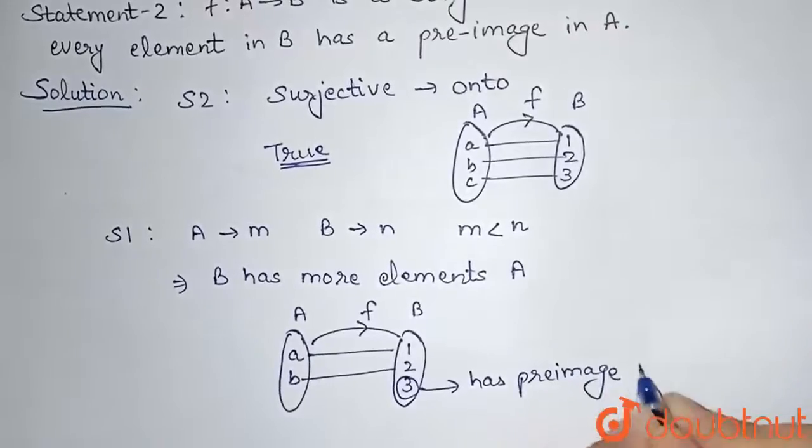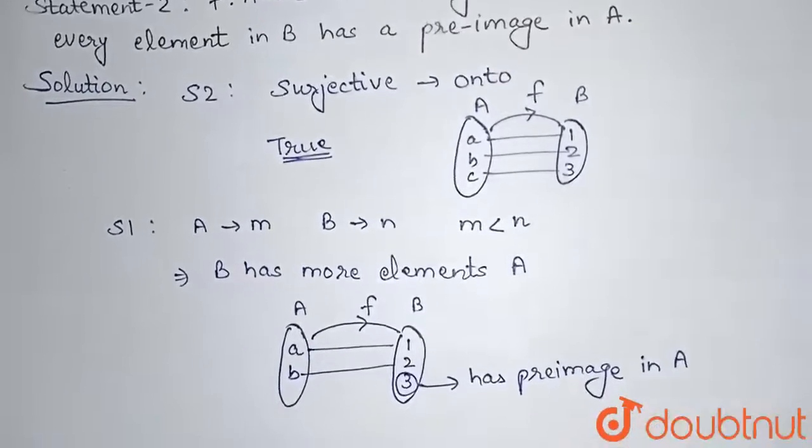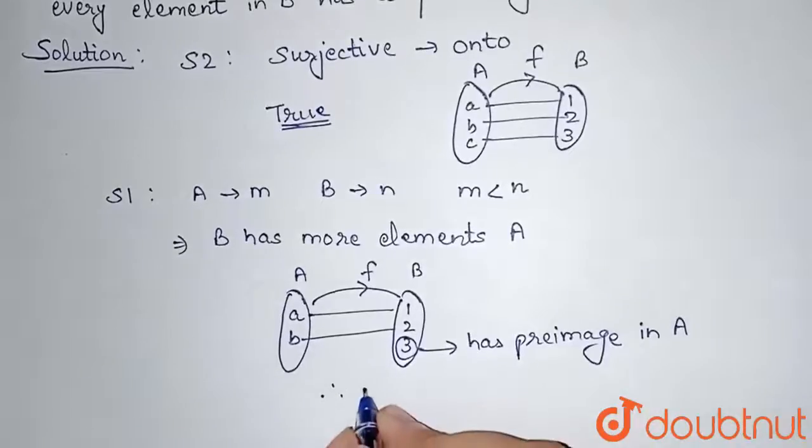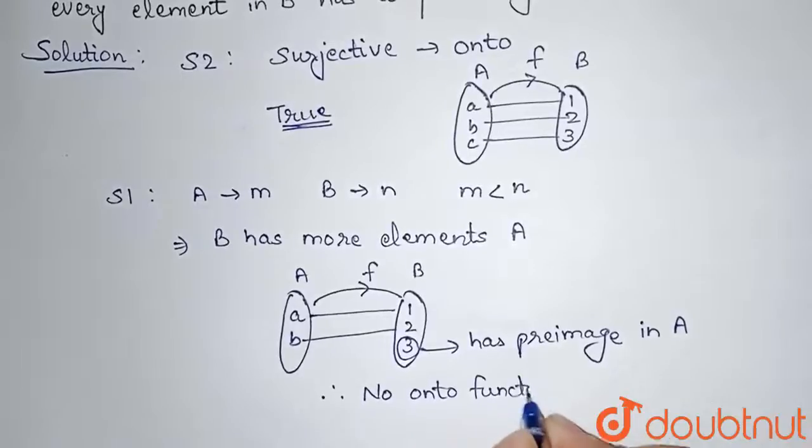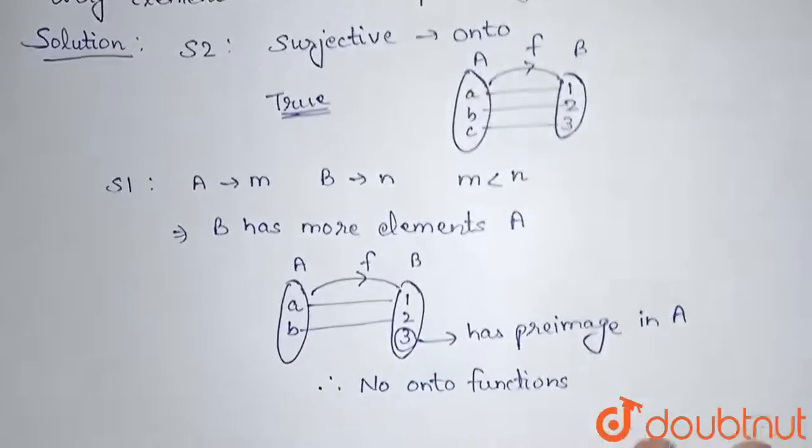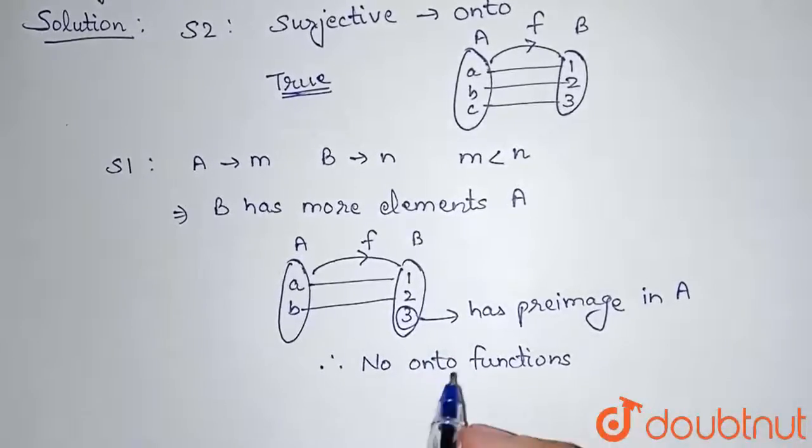So here I can write has no pre-image in A. So therefore, according to this concept, we have no onto functions possible for such kind of a set. So the number of onto functions that we see here will be 0.